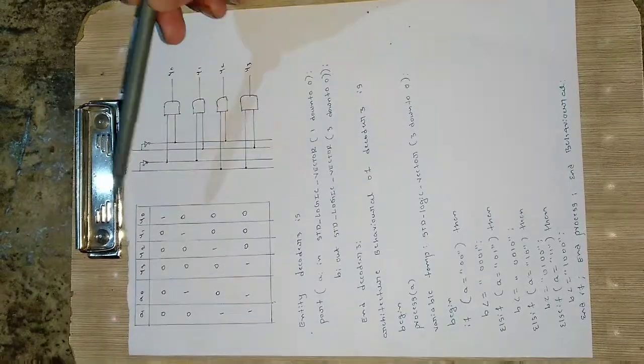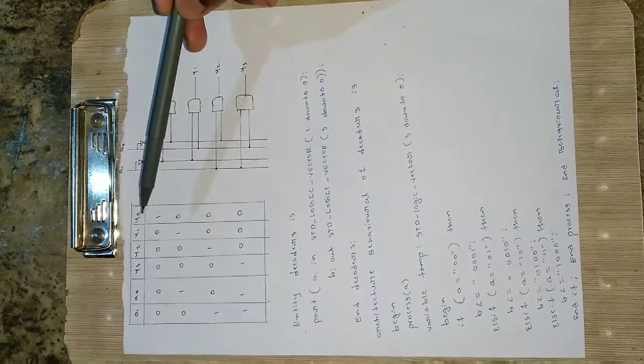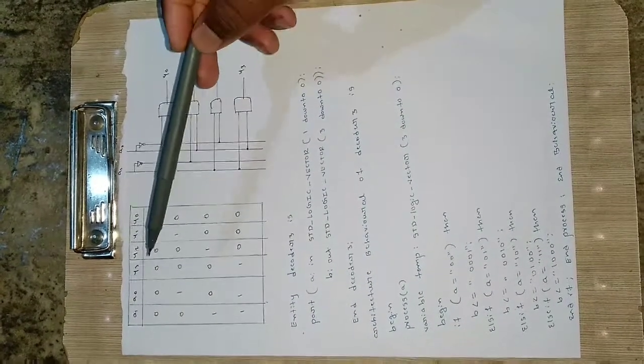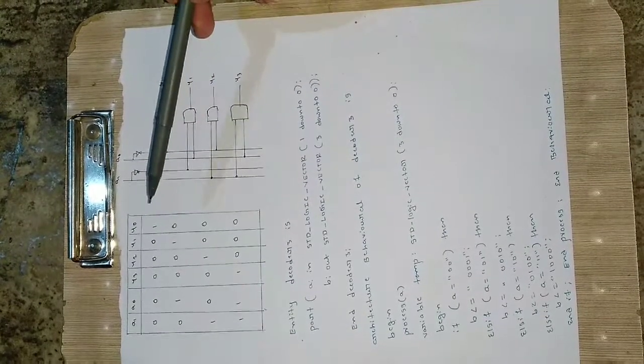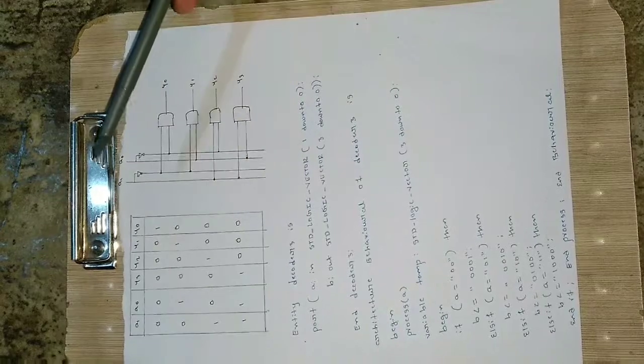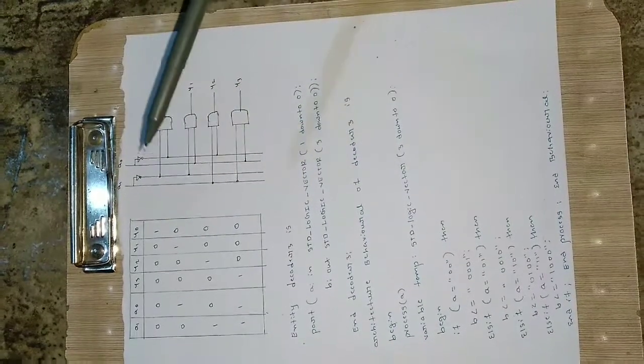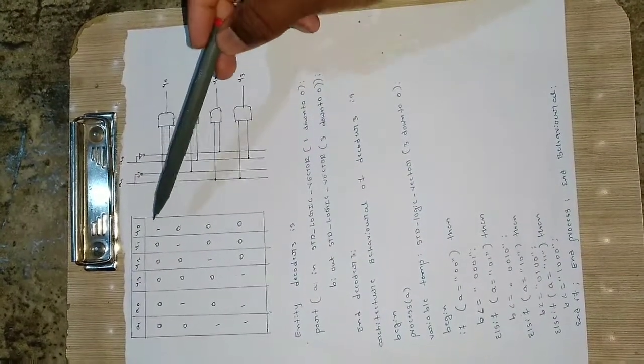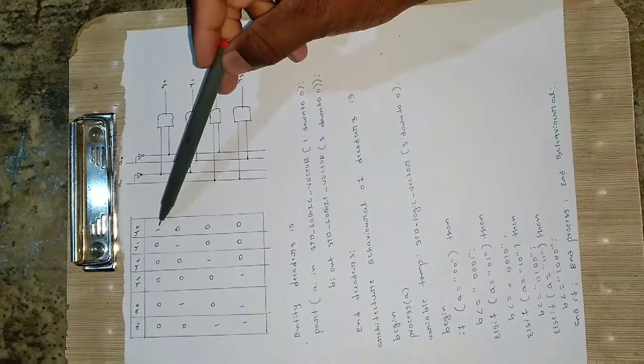So the truth table for that one is here: a1 a0 y3 y2 y1 y0. If the input is 0 0, the output will be decoded like 0 0 0 1. Means 0 0 in binary when you convert to decimal it will be 0. So the 0th bit will be high and others will be 0.